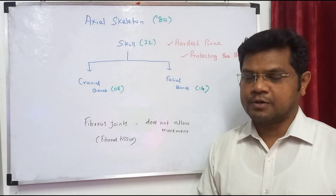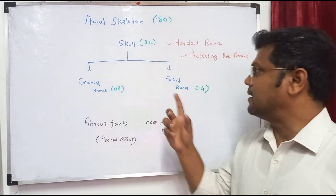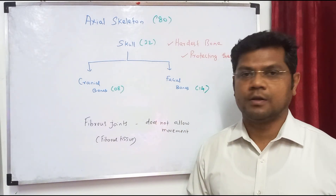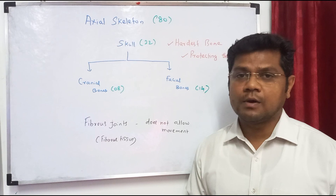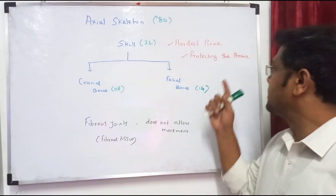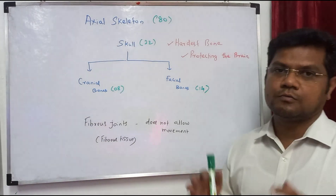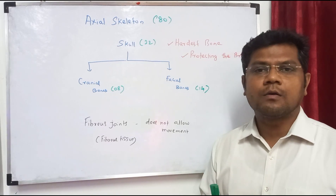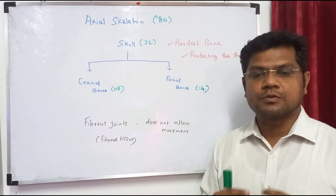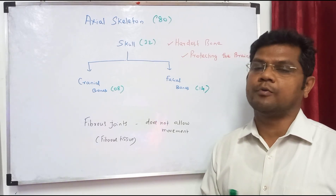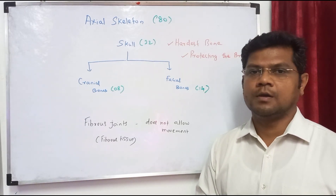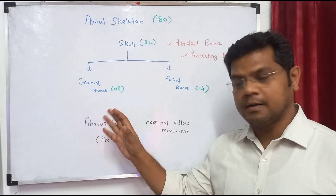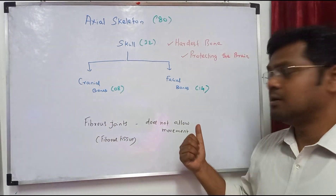The first component of the axial skeleton is the skull. The skull is the hardest bone present in our body and its main role is protecting the brain. Vital organs are protected. The skull has 22 bones — cranial and facial.